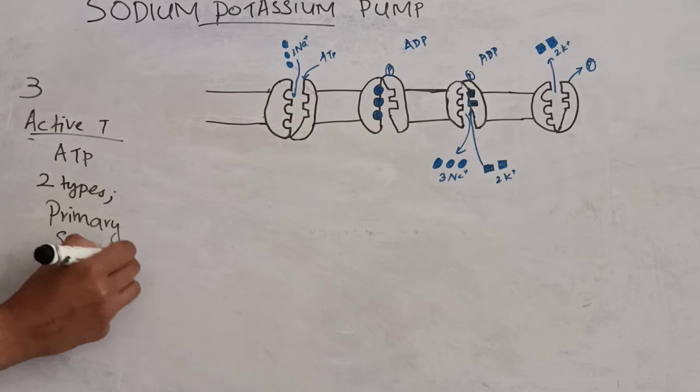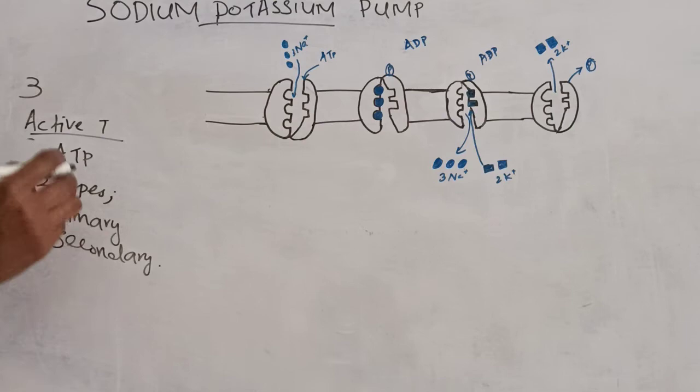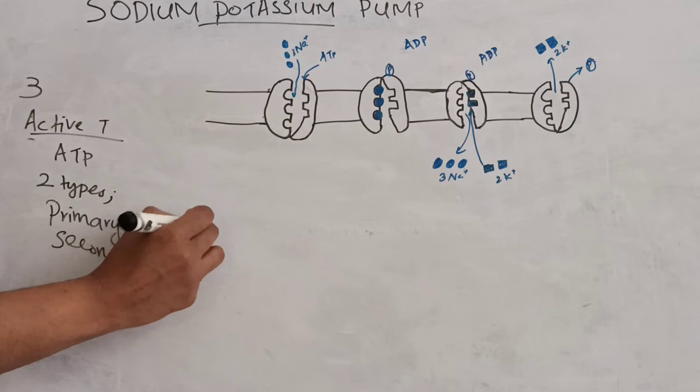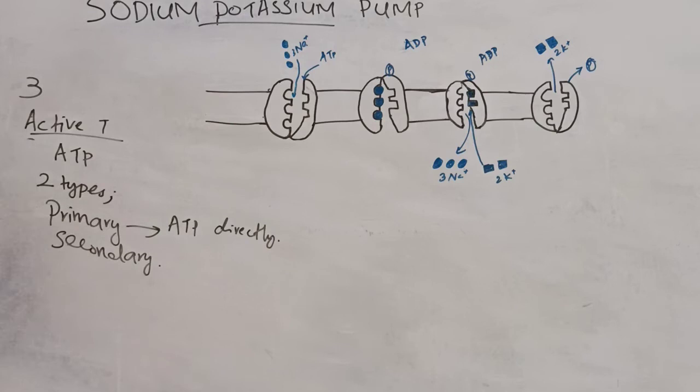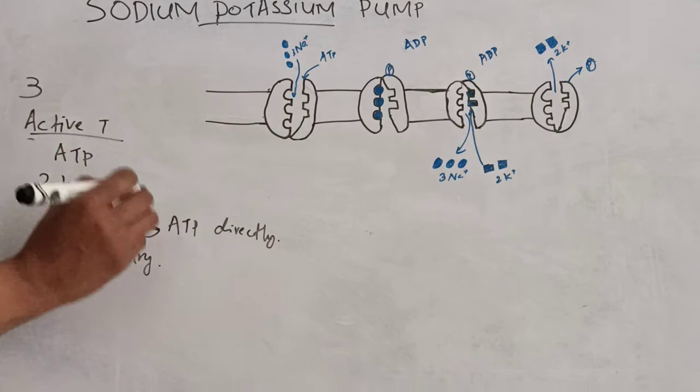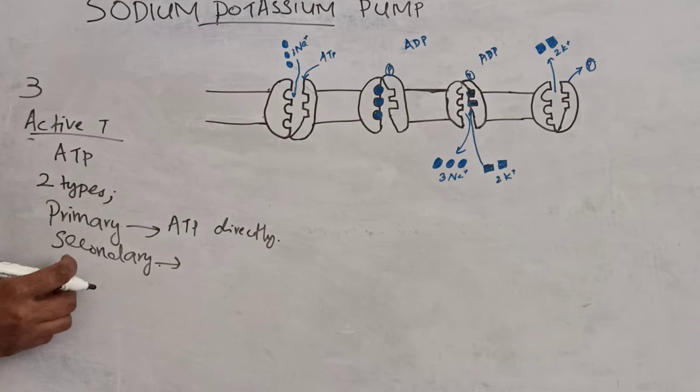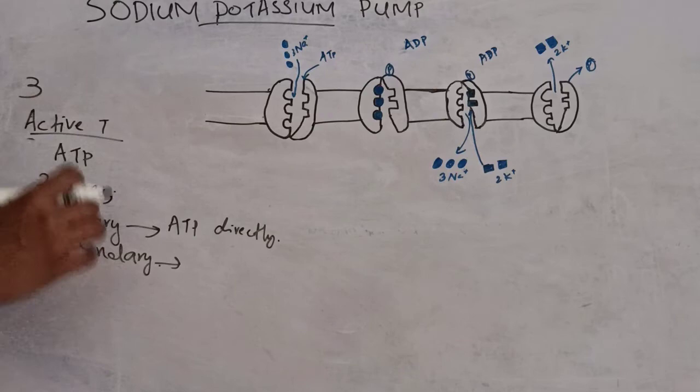Primary active transport means they use energy directly from the hydrolysis of ATP. Secondary active transport means energy utilized in the transport of one substance helps in the movement of another substance.